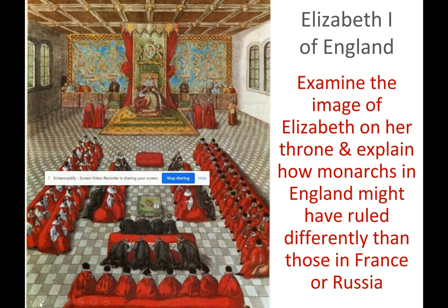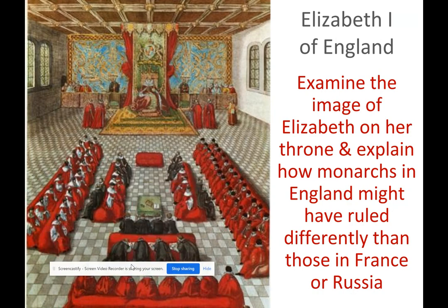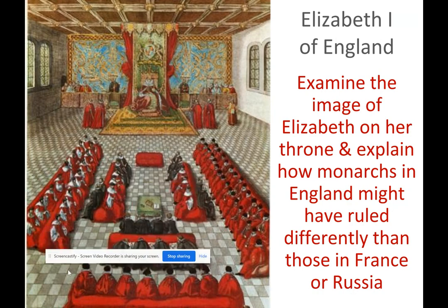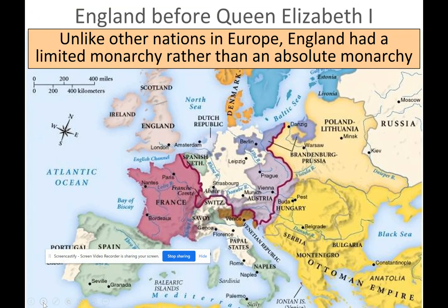Let's look at England — specifically Elizabeth I. Unlike other nations in Europe, England had a limited monarchy rather than an absolute monarchy. The throne did not have complete and total power; there was a limit to their power.